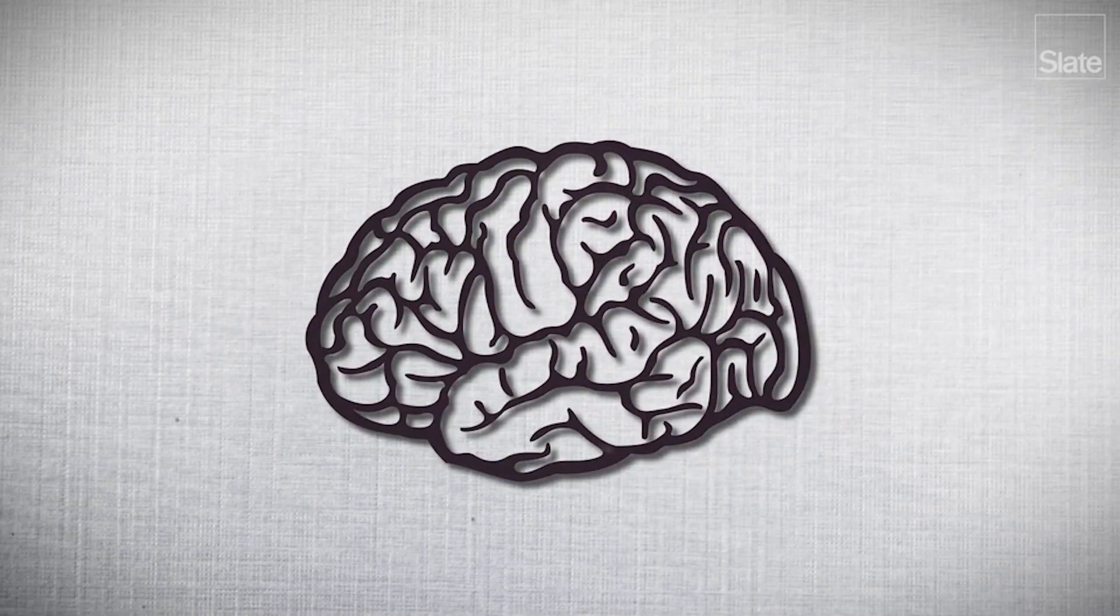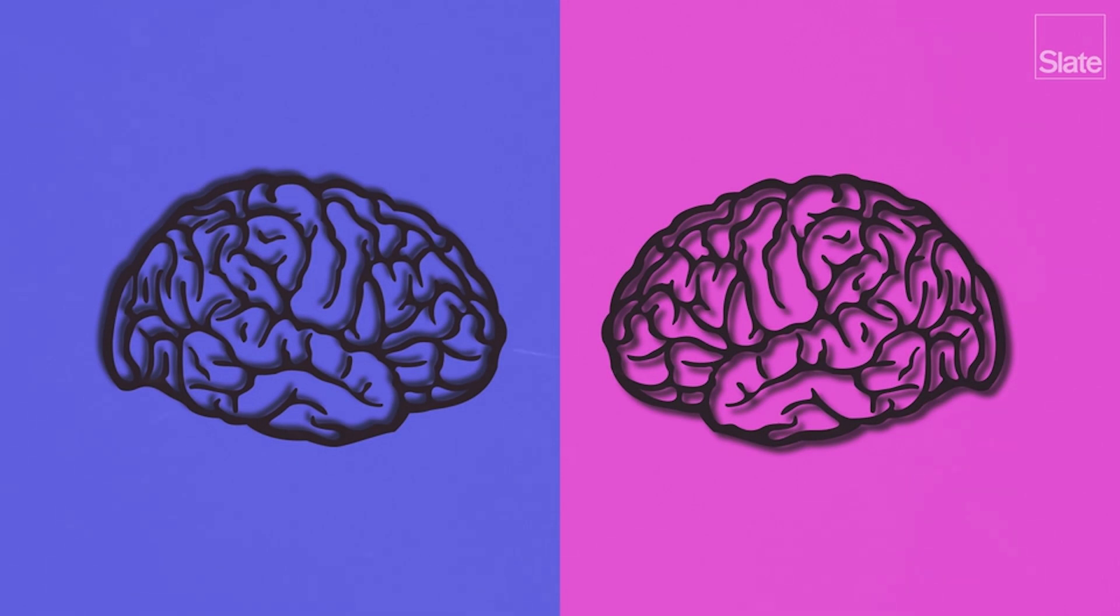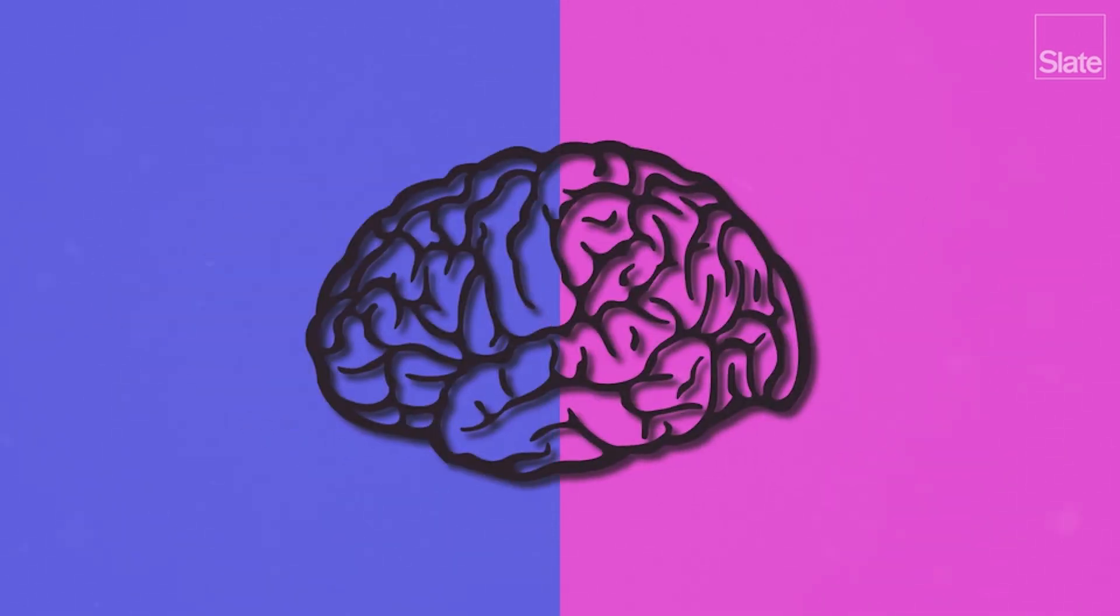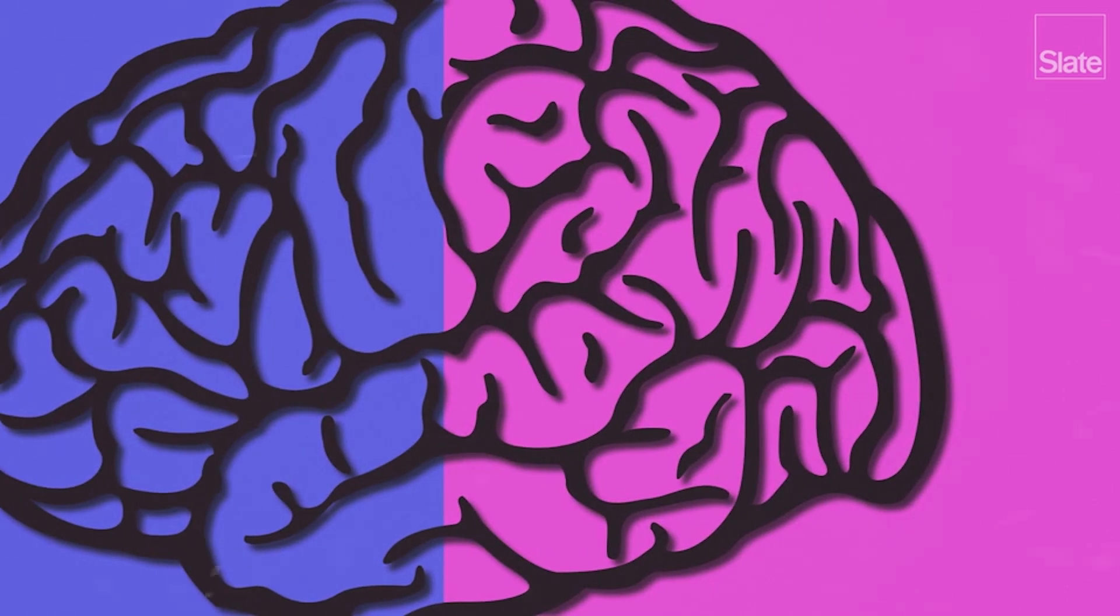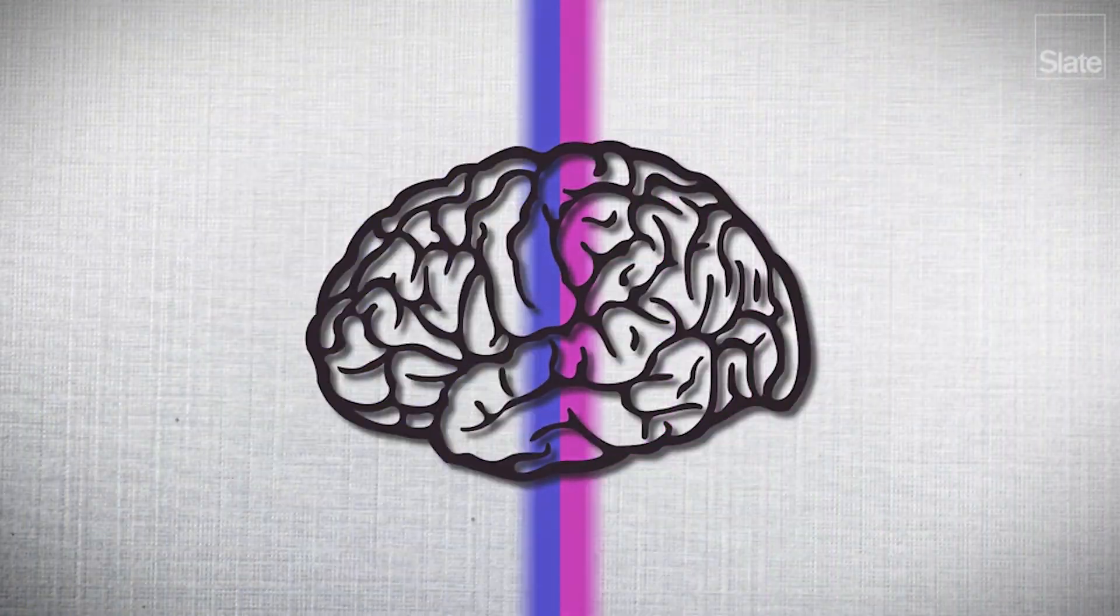The researchers reasoned that if there really are pronounced differences between male and female brains, then they should see a clear split in these features. One set of features in men's brains and another in women's. But alas, they found no such split.